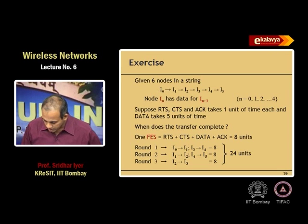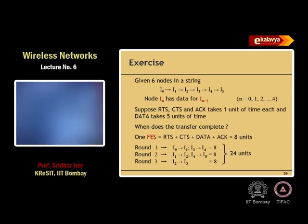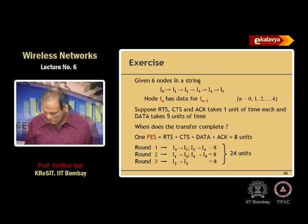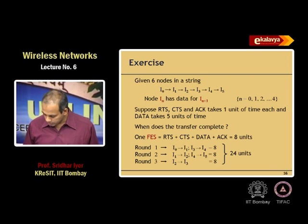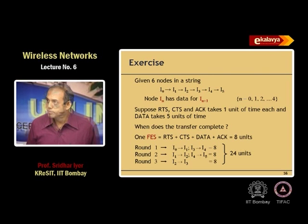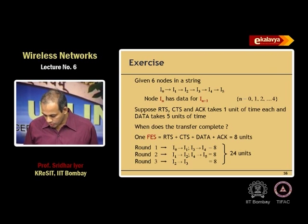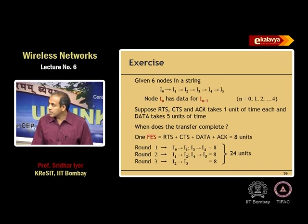How many transmissions can go in parallel? In round 1, if I0 is transmitting to I1, can anything go in parallel? If I2 tried to transmit to I3 simultaneously with I0 transmitting to I1, there would be a collision at I1. So I2 cannot transmit at the same time as I0, even though it is transmitting in a different direction.